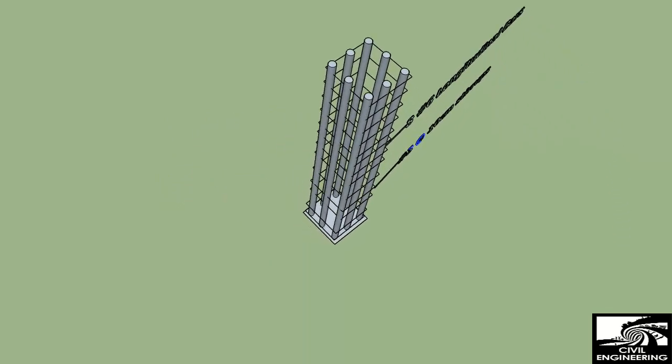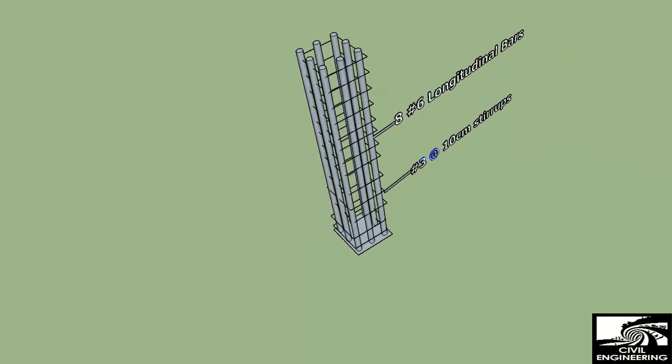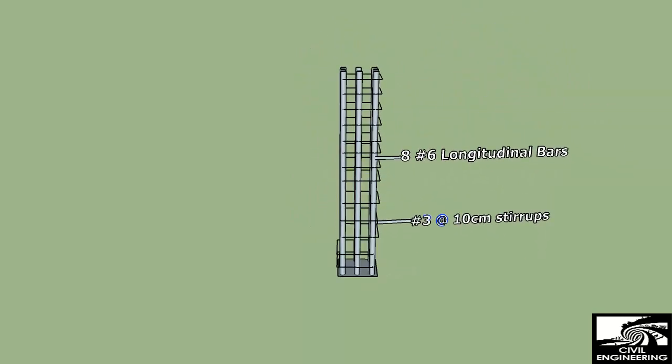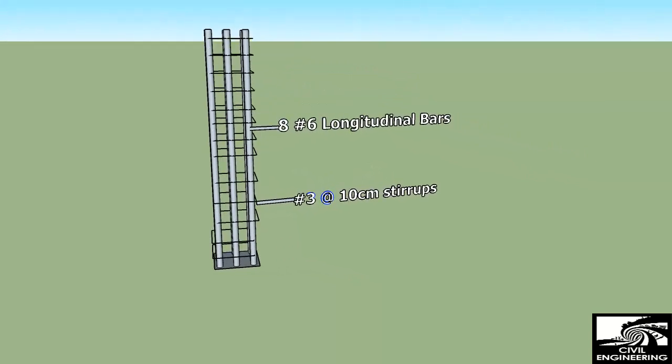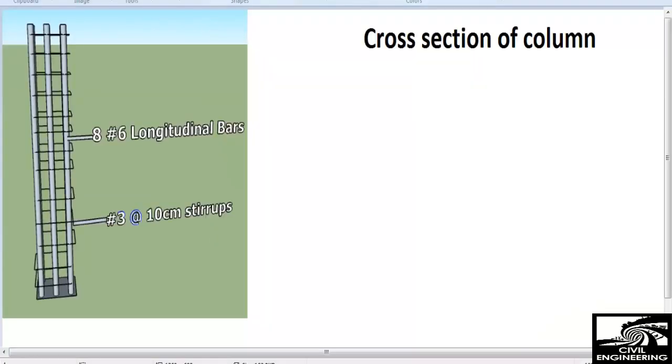This is the full detail of the column: eight number six longitudinal bars and number three at ten centimeter stirrups are used. Now I'm showing you the cross-section of the column, how to draw the cross-section if we have the column. These are the details here.